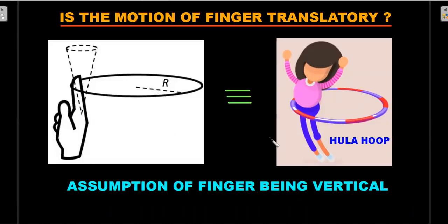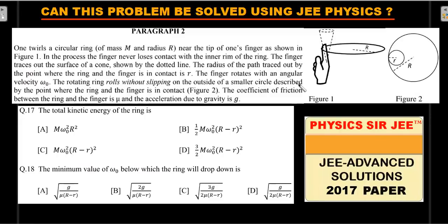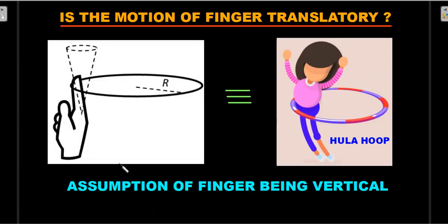One point I asked in a community post a few days back was whether the finger's motion is rotatory, because the question says 'the finger rotates with angular velocity omega-naught.' There's a slight ambiguity there — he's talking about the point of contact going around in circular motion. It's not rotatory motion, it's actually translatory motion, especially if the finger is considered nearly vertical. His motion is similar to the hula hoop, where the person moves in translatory curvilinear motion — they don't turn around.